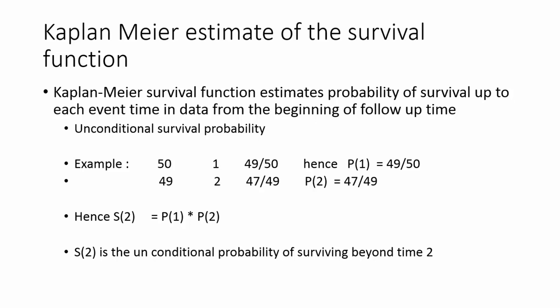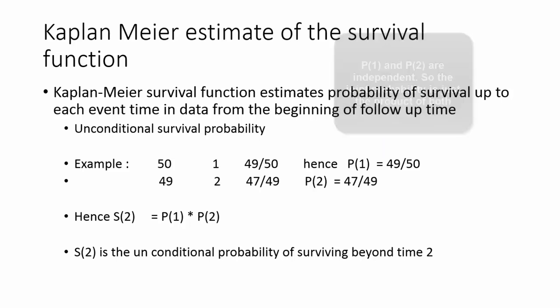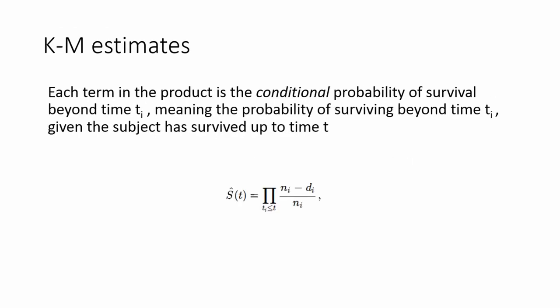At time two, out of 49 people, two die. What's the conditional probability that you are going to survive beyond time two? It's 47 by 49. But survival function or survival probability is actually the unconditional probability, not the conditional probability. We denote it as S of two. S of two is the product of the conditional probability of survival at time one multiplied by the conditional probability at time two.